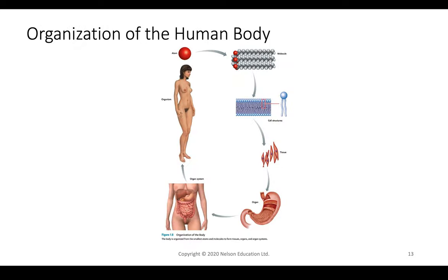Now that we've done an overview of the biological classifications of organisms, let's talk about the human body. The human body is comprised, at the very smallest level, of atoms. Atoms are put together into molecules; molecules come together to create cell structures; cell structures come together to make cells; cells come together to make tissues; tissues come together to make organs; organs come together to make organ systems like the digestive system, comprising the esophagus, stomach, small intestines, large intestines, and rectum; and multiple organ systems come together to create the organism.